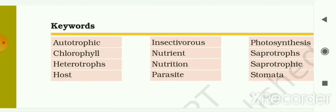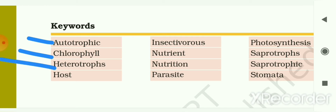Now we will see some keywords. Autotrophic nutrition is the mode of nutrition in which organisms synthesize their food by themselves from simple substances. Chlorophyll is the green pigment present in plants. Heterotrophs are organisms that are dependent on other plants or animals for their food requirement. A host is an organism on which a parasite depends for nutrition.